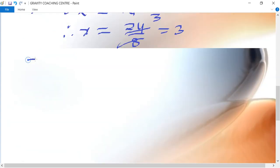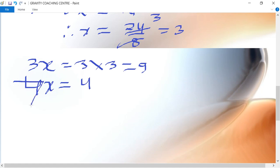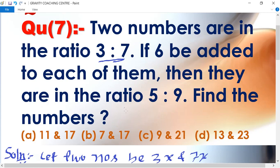Therefore the two numbers equal to 3x means 3 into 3, 9, and another number is 7x, so 7 into 3 equal to 21. So 9 and 21 is the answer, option C is the right answer.